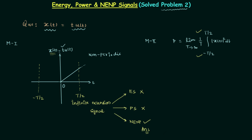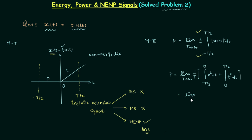From −T/2 to 0 the signal value is 0, and from 0 to T/2 the signal value is t. So we compute: limit T→∞ of (1/T) times [ integral from −T/2 to 0 of 0² dt + integral from 0 to T/2 of t² dt ]. The first integral is 0; the integral of t² is t³/3, evaluated from 0 to T/2, giving (T/2)³/3 = T³/24.